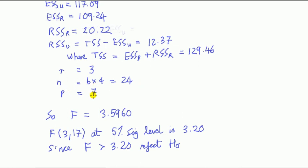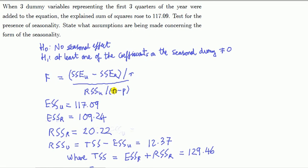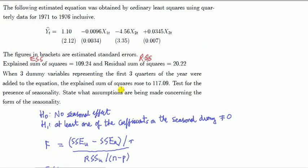P is the total number of parameters in the unrestricted model. Let's count it. This is the restricted model plus the three. So I've got one, two, three, four, and then plus three. That's seven.